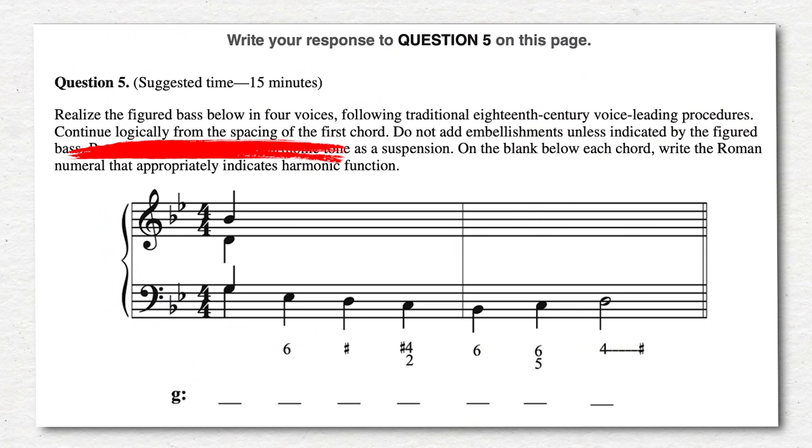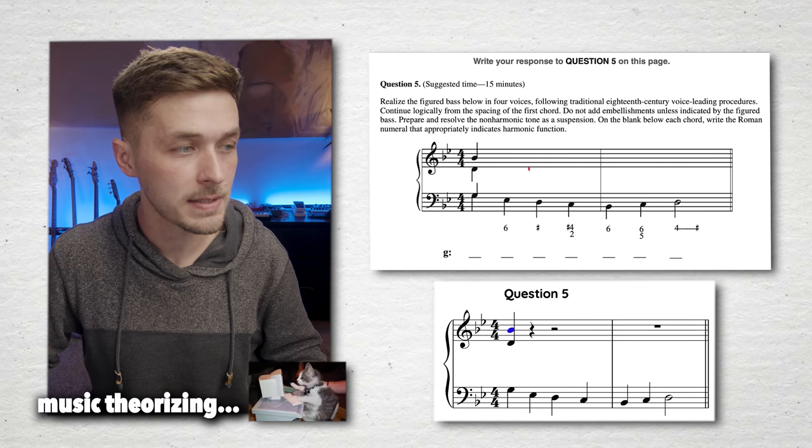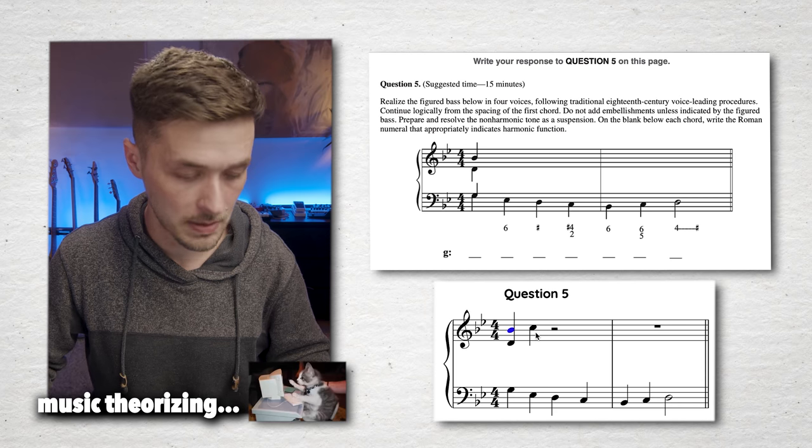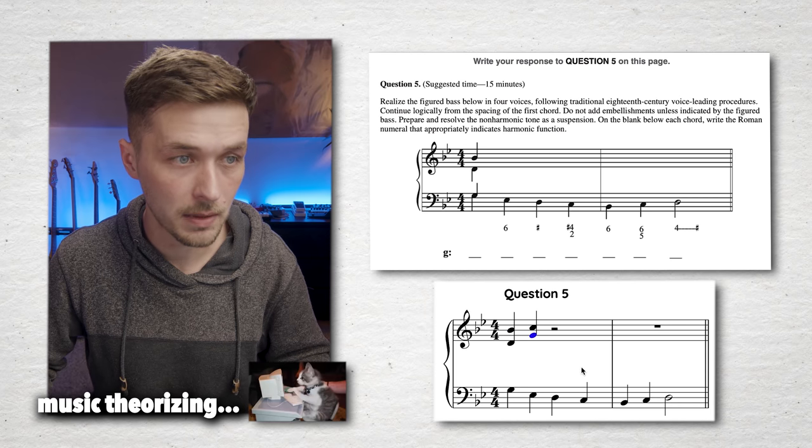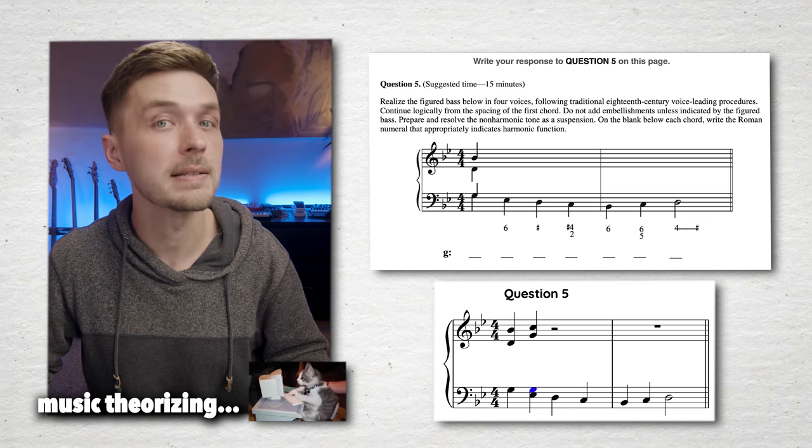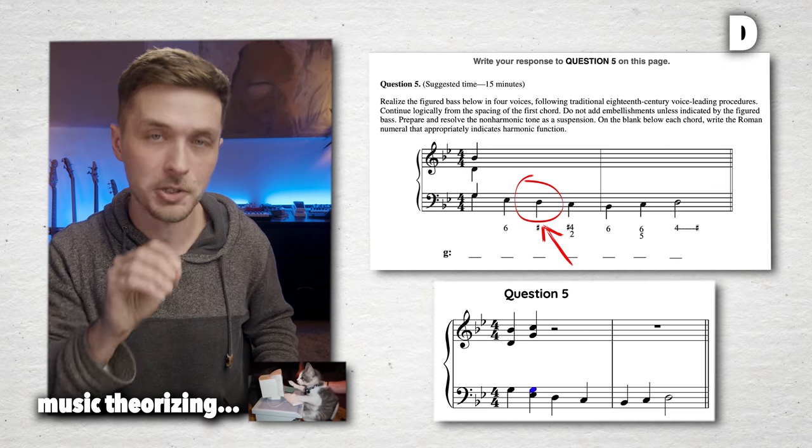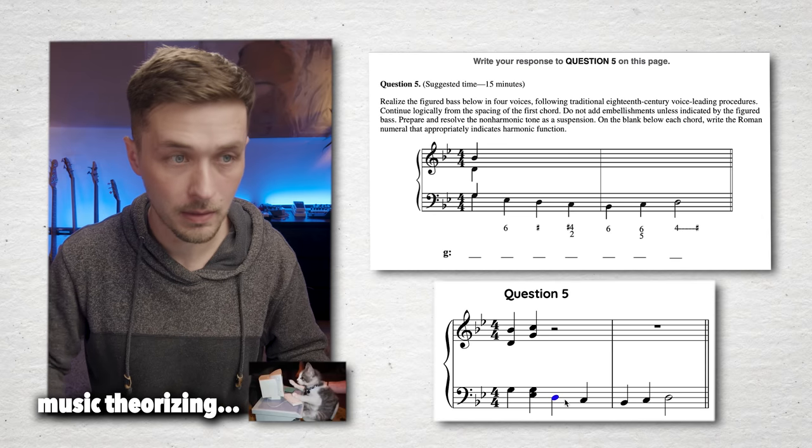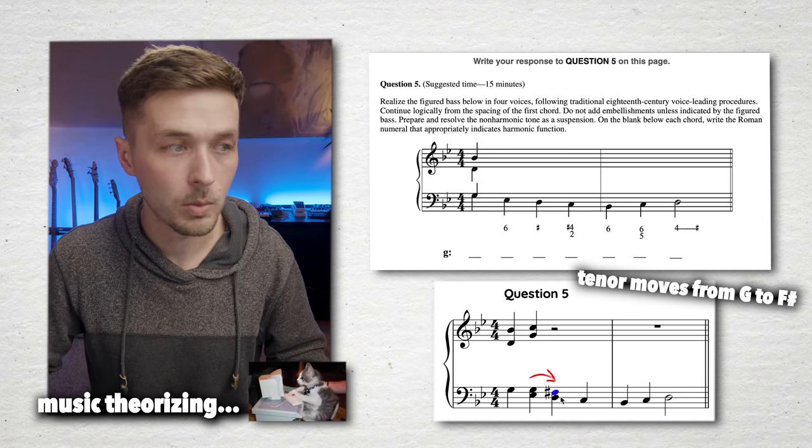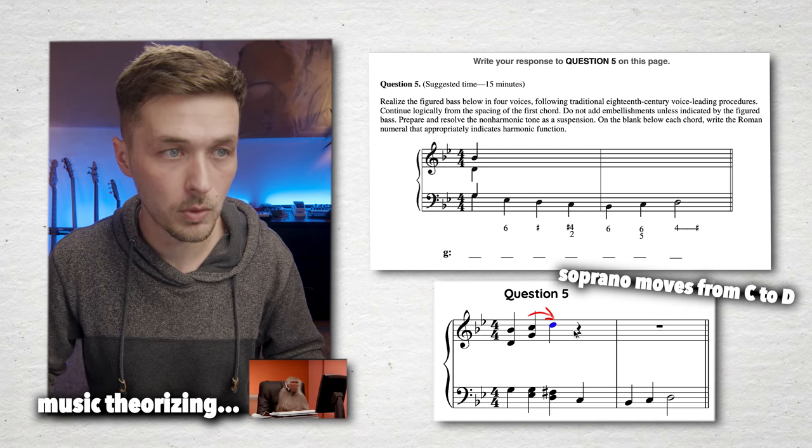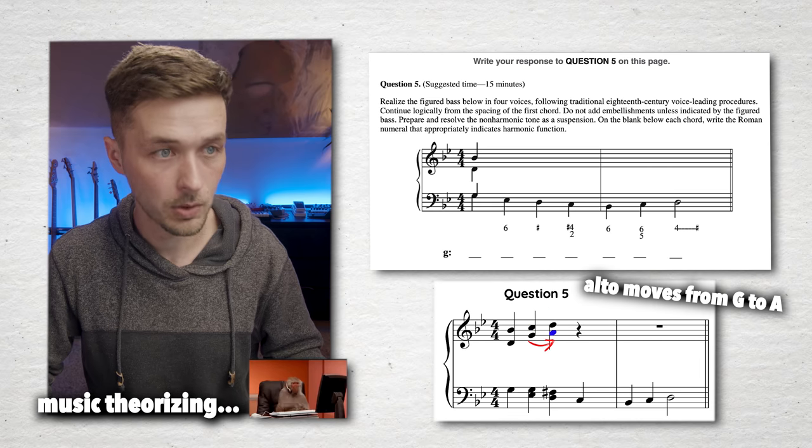Realize the figured below in four voices. Continue logically from the spacing of the first chord. Do not add any embellishments unless indicated by the figure base. The second chord, we have a six and an E flat, which means that's a C minor over an E flat. We are going to go to a C in the soprano voice. We'll do a G in the alto and then maybe a G in the tenor. Then we have a sharp, which means that it's the five chord and the figured base. When you just see a sharp means you're sharp the three, which in the context of the key of G minor would be an F sharp.